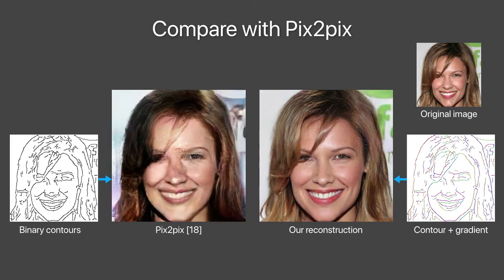The recent Pix2Pix method, which uses a binary contour map as input, fails to preserve important image properties such as skin tone, highlights, and hair color in this example. This shows that it is too ambiguous to use only the location information of contours. Local information, such as gradients, is crucial for high-fidelity reconstruction.